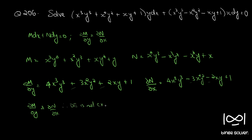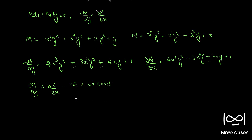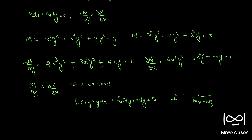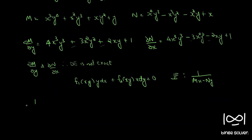Now we have to find the integrating factor. The given equation is in the form f₁(xy)·y dx + f₂(xy)·x dy = 0. In such cases the integrating factor is given by 1/(Mx - Ny). So we find Mx minus Ny: 1/(Mx - Ny) equals 1 divided by 2x⁴y⁴ + x³y³ + x²y² + xy.